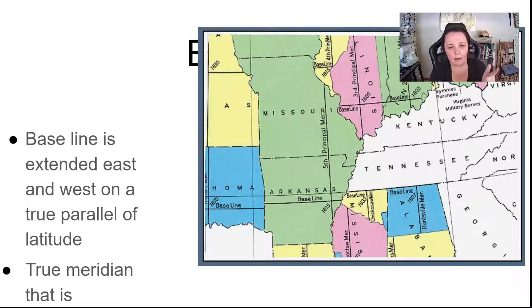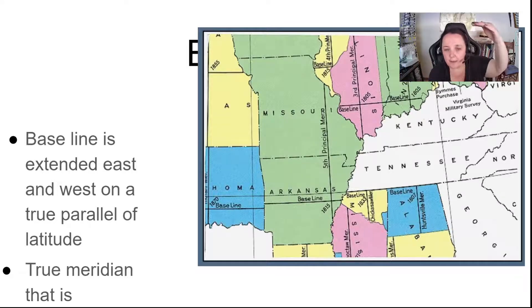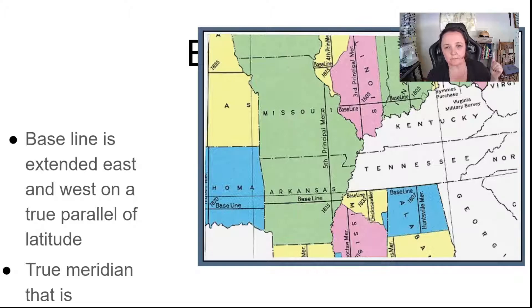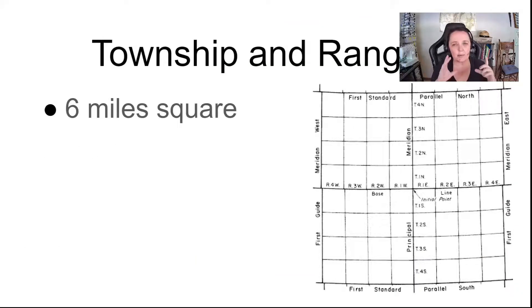Here's an example. We can see a baseline in the middle of Arkansas. The northern part of Arkansas would have township numbers going north from that baseline, and the southern part would go south from that baseline. There's a fifth principal meridian, so the far northeastern corner of Arkansas would have eastern ranges and the rest would have western ranges. A township and range — often just called a township — is a six mile by six mile square.